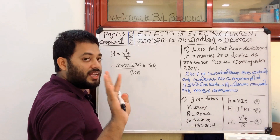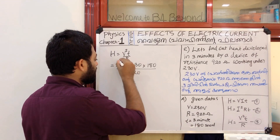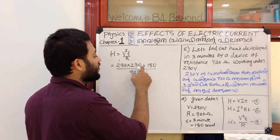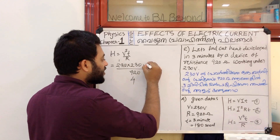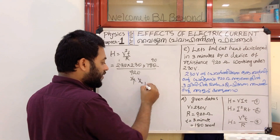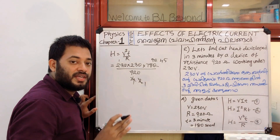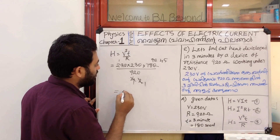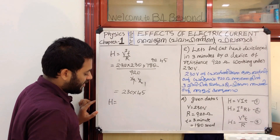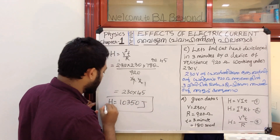Substituting into H equals V squared T by R, when we multiply through and cancel the denominator, the answer is 230 into 180 divided by 920. So heat developed H equals 10,350 joules.